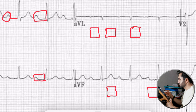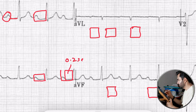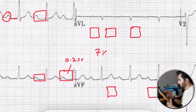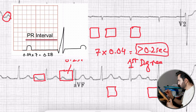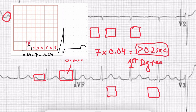The PR Interval starts at the beginning of the P-wave and ends at the start of the QRS. If the PR Interval spans 1.5 big boxes, that is more than 5 small squares. For example, if you count 7 small squares, multiply 0.04 × 7, giving greater than 0.2 seconds — this indicates a prolonged PR Interval, which is a 1st degree heart block. A fixed prolonged PR Interval is 1st degree heart block.